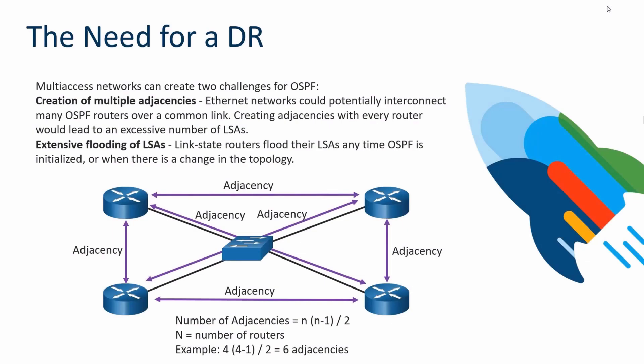After all those LSRs and LSUs are exchanged, you've reached full convergence. Taking a step back: when the DR and BDR relationship comes into play in the Two-Way state, why is it important? The reason is multi-access networks, which commonly use Ethernet connectivity between routers.